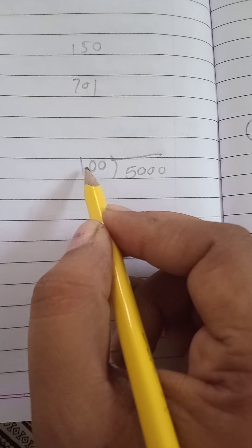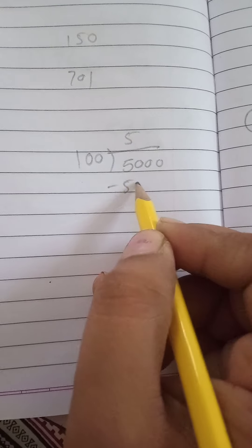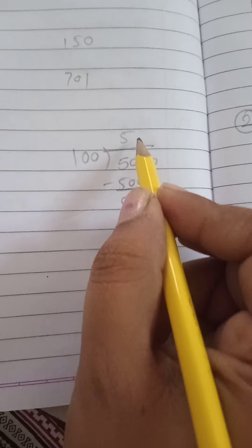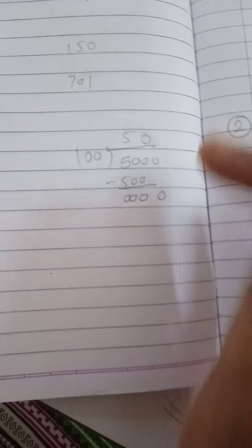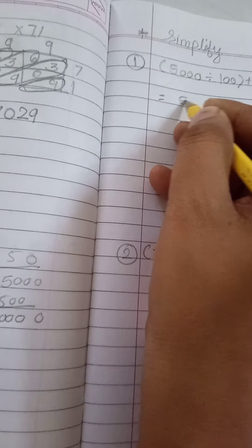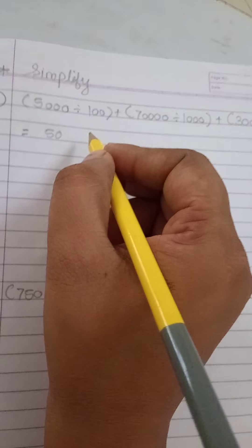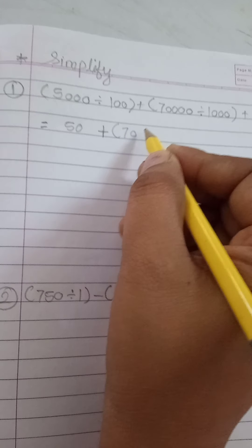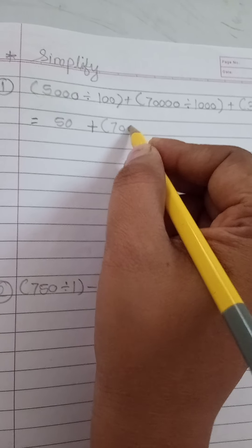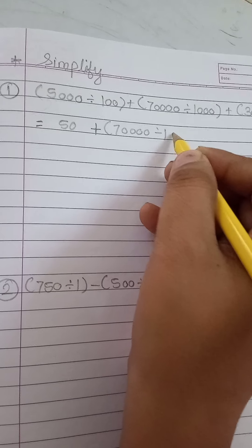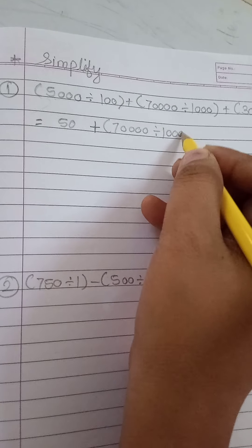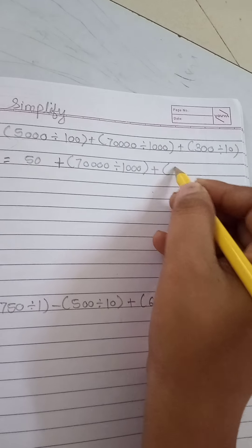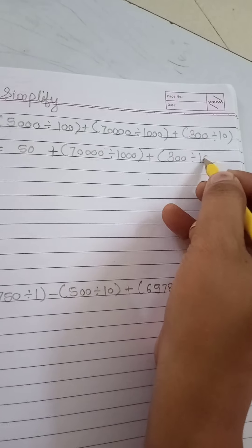100 times 5 is 500, and adding the zero gives 5000. So the answer is 50. Plus, write the rest as it is: 70000 divided by 1000 in bracket complete, plus 300 divided by 10.